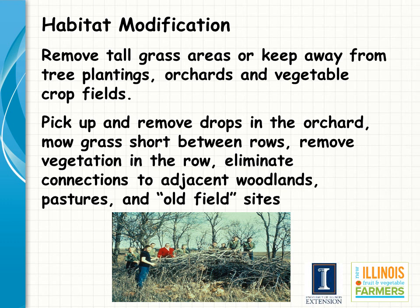Because rabbits have a small home range, habitat modification can reduce damage by keeping escape cover and preferred habitat away from crop fields and orchards. Rabbits prefer tall grass, shrubs, and brushy areas because these offer protection from predation. Mowing vegetation surrounding crop fields and within orchards can reduce these preferred escape cover areas. When pruning fruit trees, don't leave piles of branches within the orchard and pick up dropped fruit to reduce food supplies. Habitat modification may not eliminate the damage, but it can help make other combined techniques in your integrated pest management program more effective.